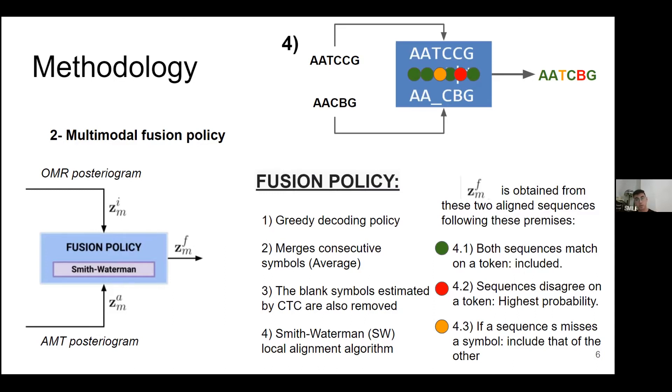The second step is we have to merge the consecutive symbols. This is because a token can span more than one frame, so we have to average all the probabilities to have only one probability per frame. At the same time, we remove the blank symbols estimated by the CTC. And at the end, we have two sequences.